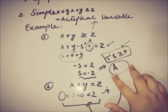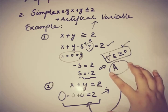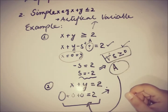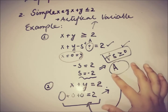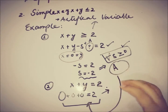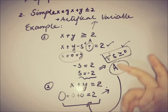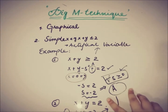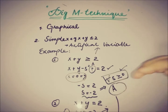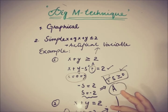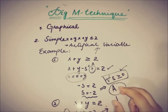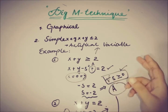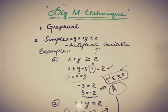A is used to denote the artificial variable in subsequent videos and problem-solving procedures, so remember that A refers only to artificial variables. There are two methods; the first one we are going to discuss is the Big M technique, which uses the artificial variable with the same algorithm as the simplex method.